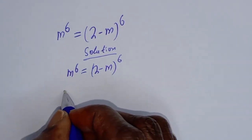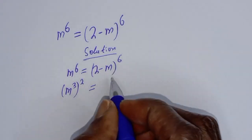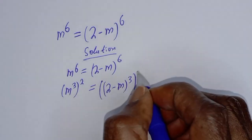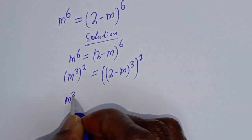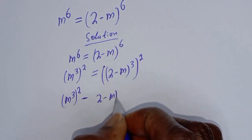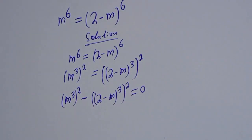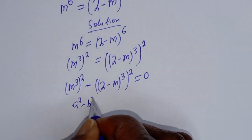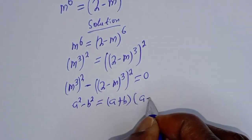m raised to power 6 can be written as m raised to power 3, all squared, and the right side can be written as 2 minus m raised to power 3, all squared. Taking this to the left side: m raised to power 3 squared minus 2 minus m raised to power 3 all squared equals 0. This is in the form of a perfect square difference. If you have a squared minus b squared, this equals a plus b times a minus b.